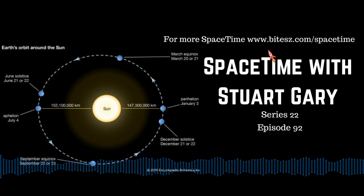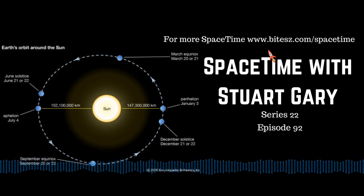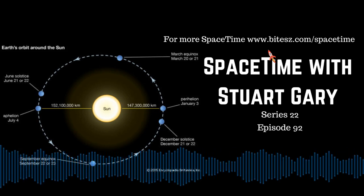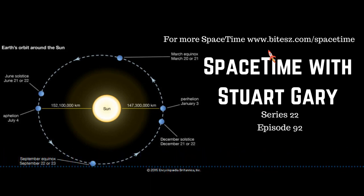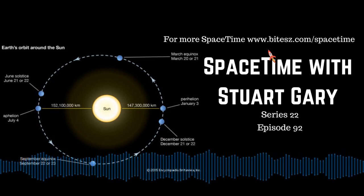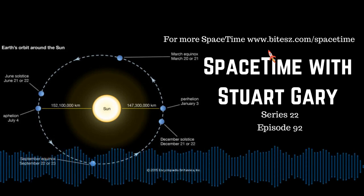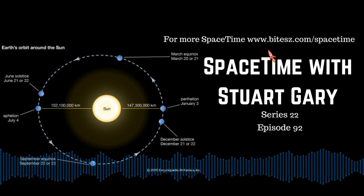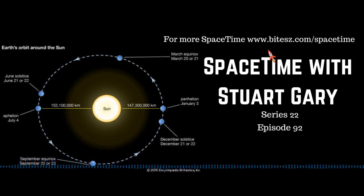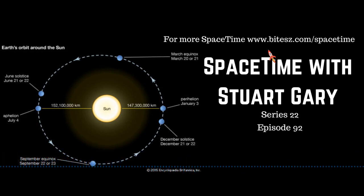Having almost no mass means neutrinos are capable of being accelerated to almost the speed of light. Neutrinos come in three known types or flavours: electron neutrinos, muon neutrinos, and tau neutrinos, each with their own specific properties.